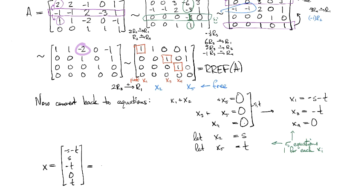And so I'm going to pull this apart into the s part, -1, 1, 0, 0, 0, and the t part, and so that's -1, 0, -1, 0, 1.